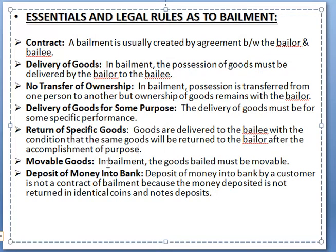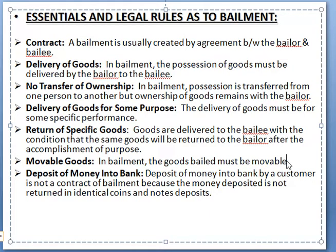The goods must be movable. In a bailment, the goods bailed must be movable. What are movable goods? A phone is movable — we can move it physically. A computer, we can deliver. A bike, we can deliver. Benches, we can deliver. A pen, we can deliver. Dress, we can deliver. These are movable goods.